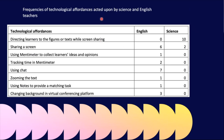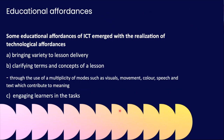The frequency of technological affordances was counted by segmenting sequences or actions within the activity or within the lesson. Now, educational affordances: some educational affordances of ICT emerged with the realization of technological affordances, so for educational affordances to be acted upon, teachers should have realized or acted upon the technological affordances as well. By using technology, what they could do is bring variety to lesson delivery or clarify terms and concepts of a lesson. They used multiplicity of modes such as visuals, movement, color, speech, and text — all of which contribute to meaning.